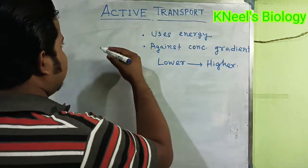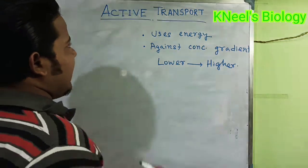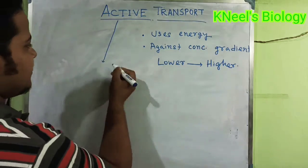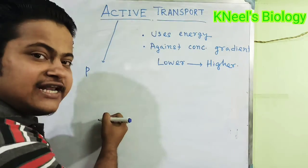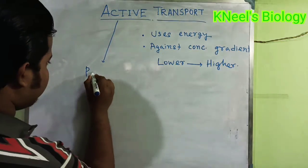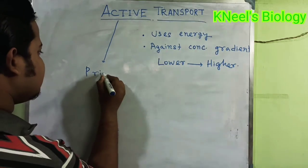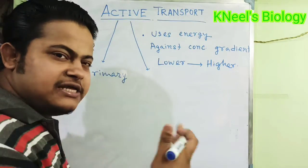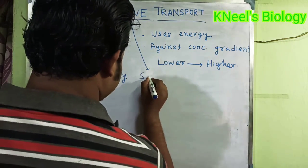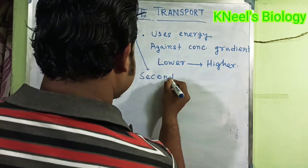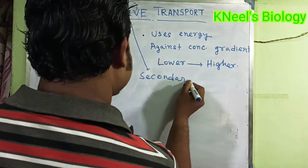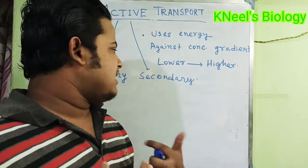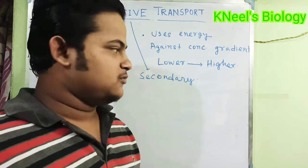Active transport has two types. The first one is primary active transport, and the other is secondary active transport. Let's explore what primary and secondary active transport mean.